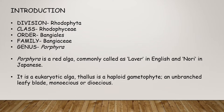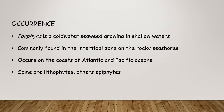Porphyra belongs to division Rhodophyta, class Rhodophyceae, order Bangiales, family Bangiaceae, genus Porphyra. Porphyra is a red alga commonly called laver in English and nori in Japanese. It is a eukaryotic alga; the thalus is a haploid gametophyte, an unbranched leafy blade, monoecious or dioecious. Porphyra is a cold water seaweed growing in shallow waters, commonly found in the intertidal zone on rocky shores, occurring on the coasts of the Atlantic and Pacific Oceans. Some are lithophytes, others epiphytes.